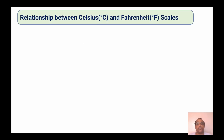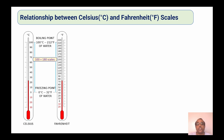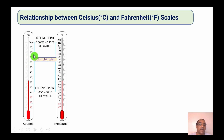Now let's see the relationship between degree Fahrenheit and degree Celsius. We can derive the equation using the freezing and boiling point of water. Water freezes at zero degrees Celsius or 32 degrees Fahrenheit, and it boils at 100 degrees Celsius or 212 degrees Fahrenheit. If you subtract zero from 100 degrees Celsius you have 100 scales, and similarly if you subtract 32 from 212 you have 180 scales in degree Fahrenheit.